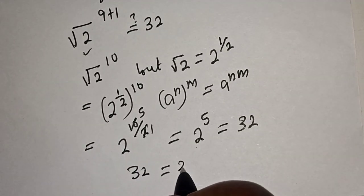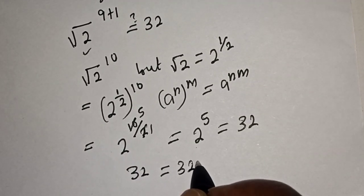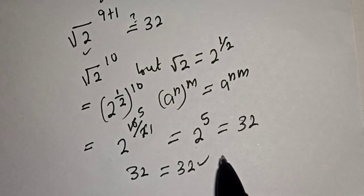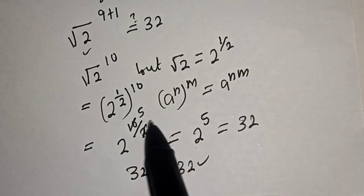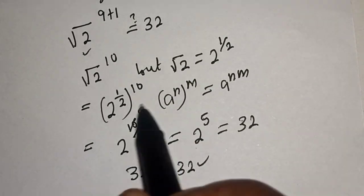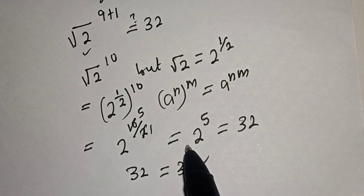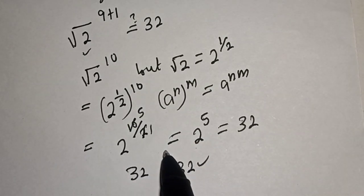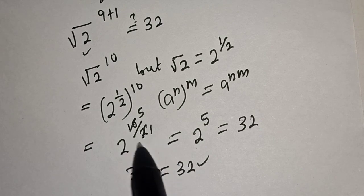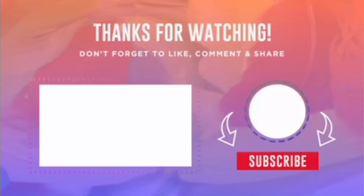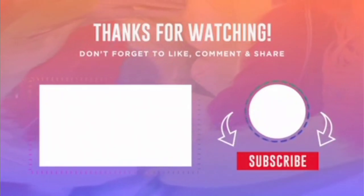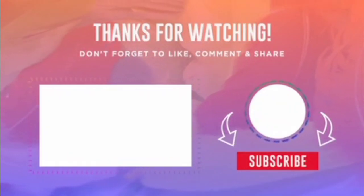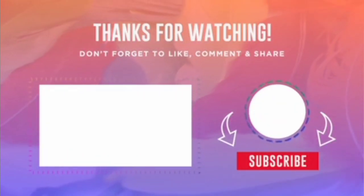Therefore the left hand side 32 is equal to the right hand side 32, which satisfies the given equation at s is equal to 9. If you enjoyed the class, please don't forget to like, share, comment and subscribe. Thank you.